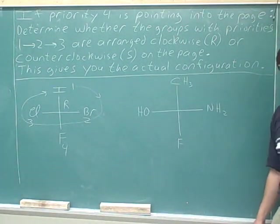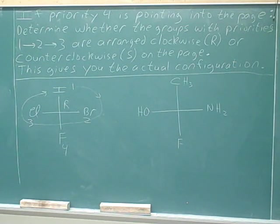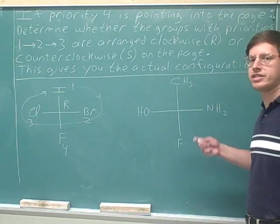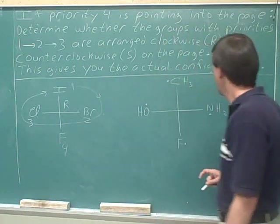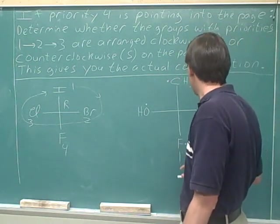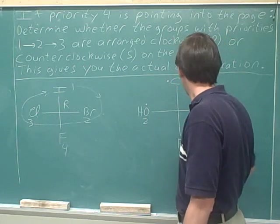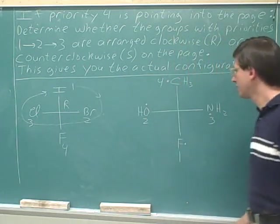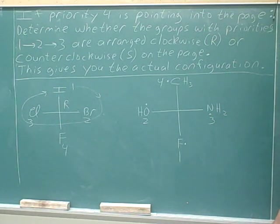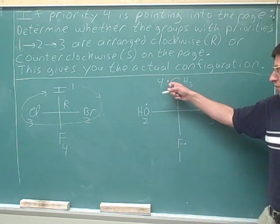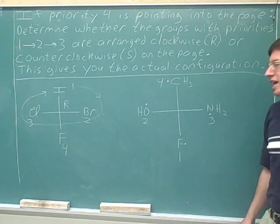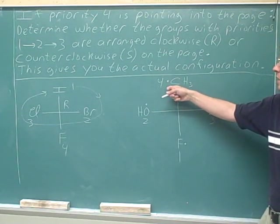Determine whether this stereocenter is R or S. I'm going to use dots to indicate the atoms directly connected to the stereocenter. Comparing those, the top priority is fluorine, then oxygen, then nitrogen, and carbon. Since there are no ties, there's no need to go further. The number 4 priority is again on a vertical line, and in a Fisher diagram the vertical line points into the page, so the number 4 priority is pointing into the page where we want it.